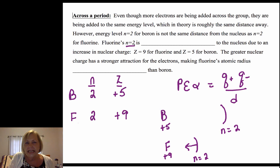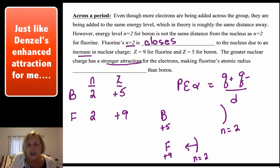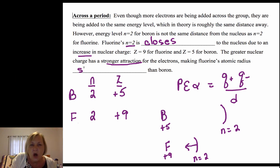Fluorine's n=2 electrons are closer to the nucleus due to an increase in nuclear charge that has a stronger attraction. So that means fluorine's atomic radius is smaller than boron's.